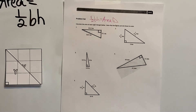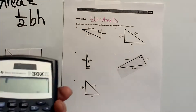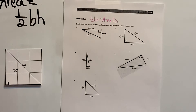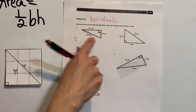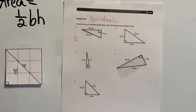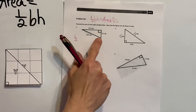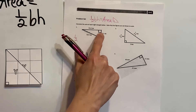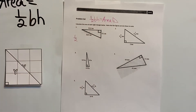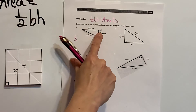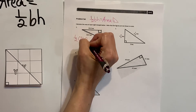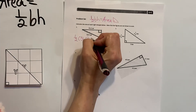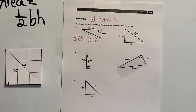We're going to use that formula today to find the area of the right triangle. You can use your calculator if you need it. For number one, we need to find the line that is perpendicular to the base. I know this is perpendicular because of the square corner showing the right angle. So the base is 31.2 and the height is 9.1.